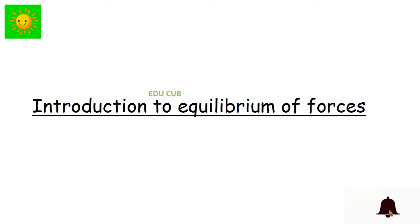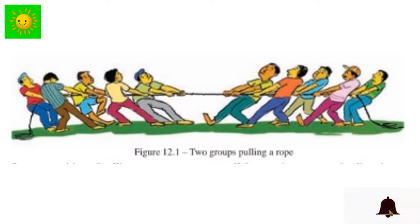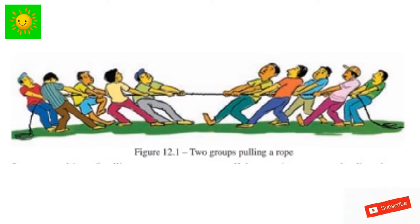Our first subtopic is Introduction to Equilibrium of Forces. This diagram shows two groups pulling a rope in a tug-of-war competition. When the force in one direction becomes greater, the rope moves in that direction. When both groups pull with equal forces, the rope remains at rest. The sum of the two forces becomes zero — the rope is said to be in equilibrium.